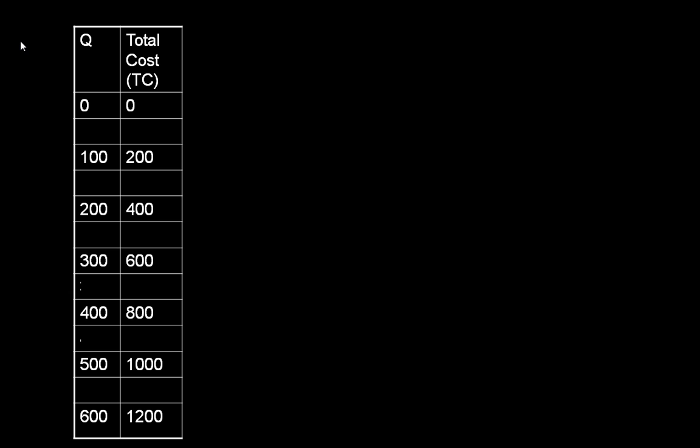Costs reflect the opportunity cost of supplying a service. In this example, the cost of supplying one extra kilogram of potatoes per week is two pounds. So the total cost of supplying zero units is zero. The total cost of supplying 100 kilograms of potatoes per week is 200 pounds. The total cost of supplying 200 kilograms of potatoes per week is 400 pounds, and so on.